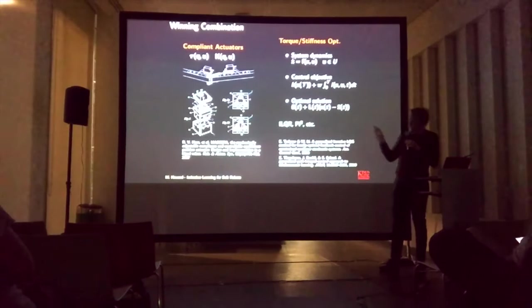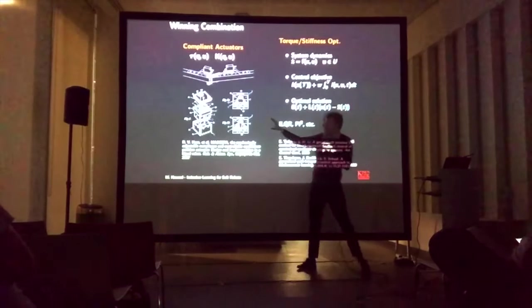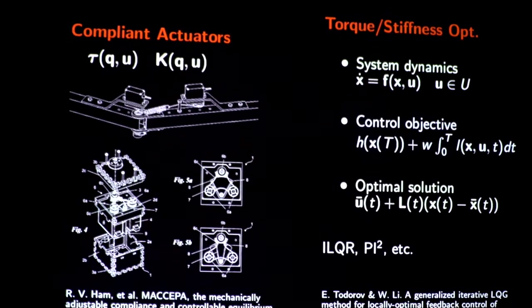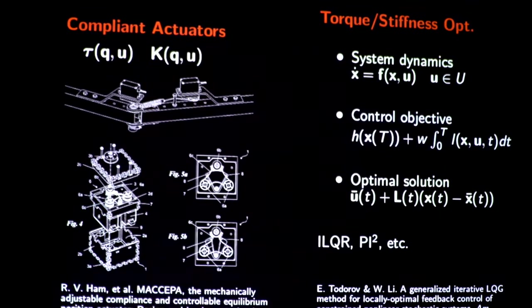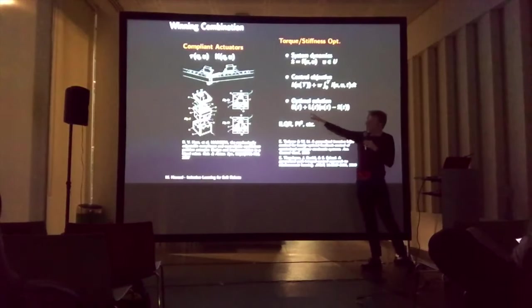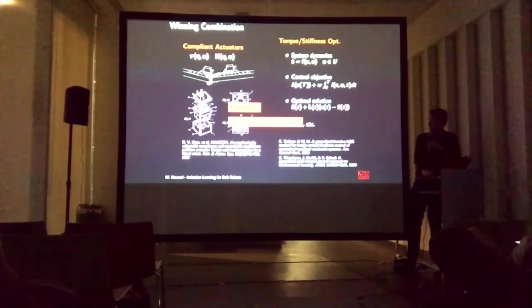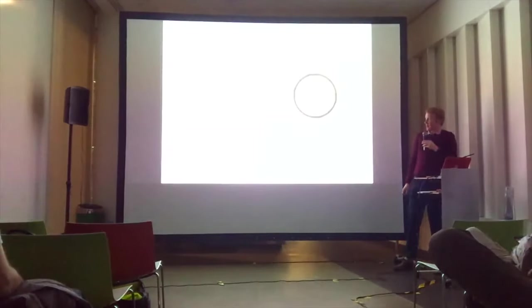So really, what we've come across is what we're calling this winning combination, which is a combination of compliance, physical compliance in the robot. So having soft actuators, which are designed to have springs and tendon-like properties, and optimal control. So this is the optimal feedback control formulation. Again, so you can just write it down. System dynamics is just a function. We have some control function. And then we come out with some optimal solution, which is crucially, a combination of feed-forward and feedback control. And there's recently been a few nice algorithms out there, such as iLQR, Pi-squared. These are called optimal feedback control algorithms. They're a little bit like reinforcement learning.